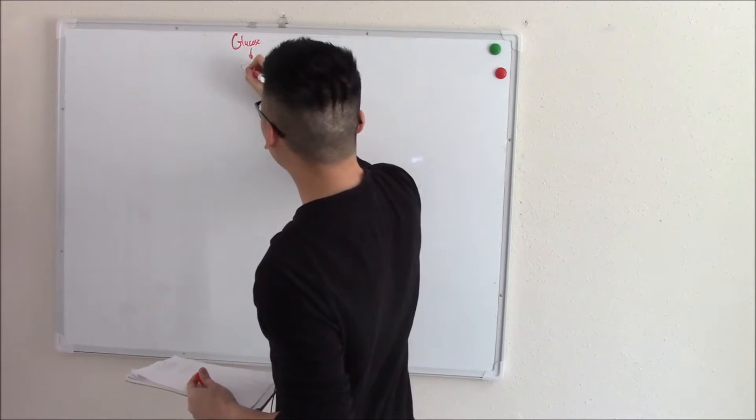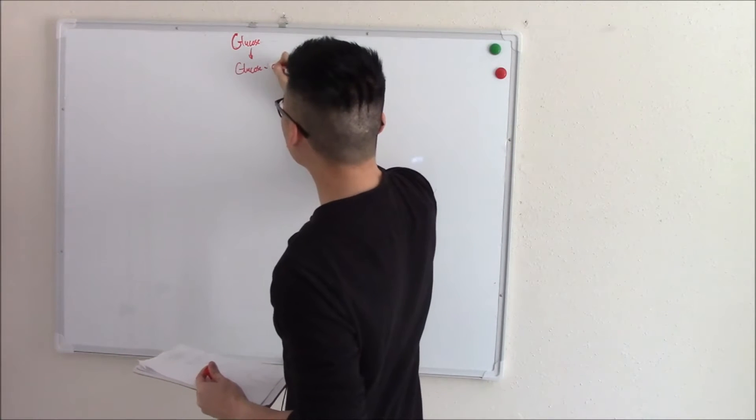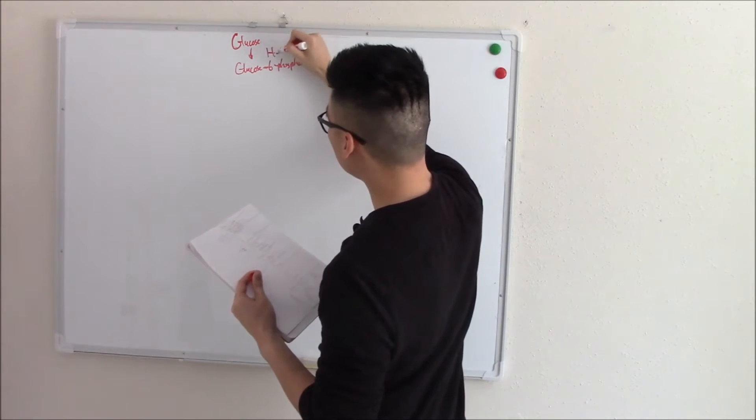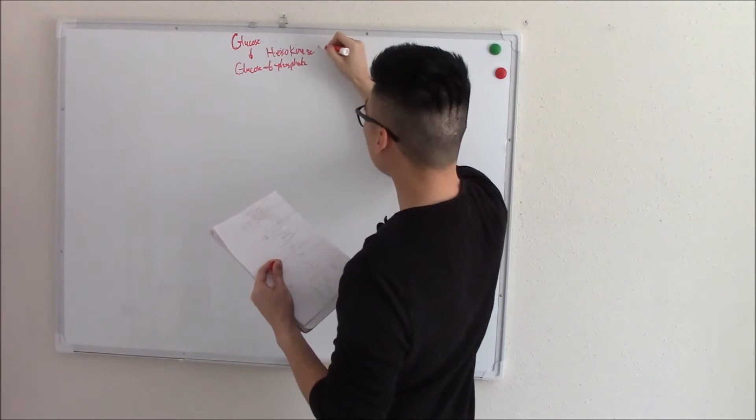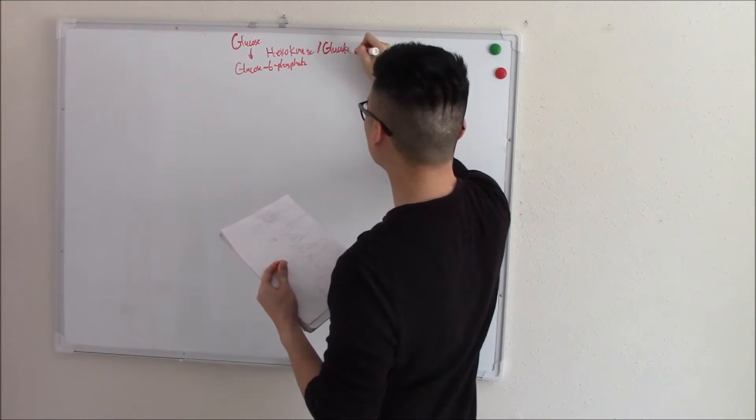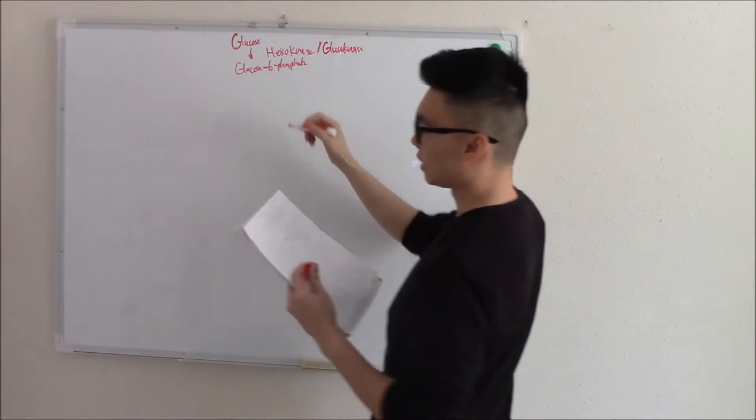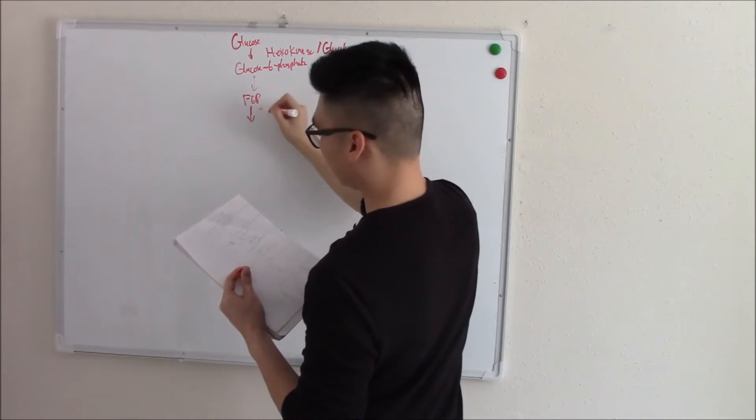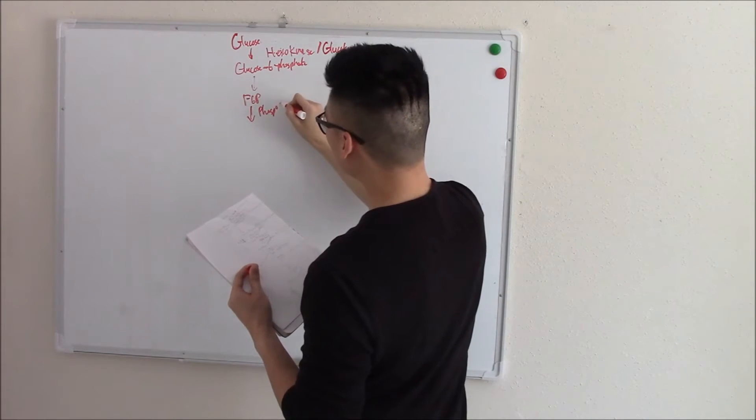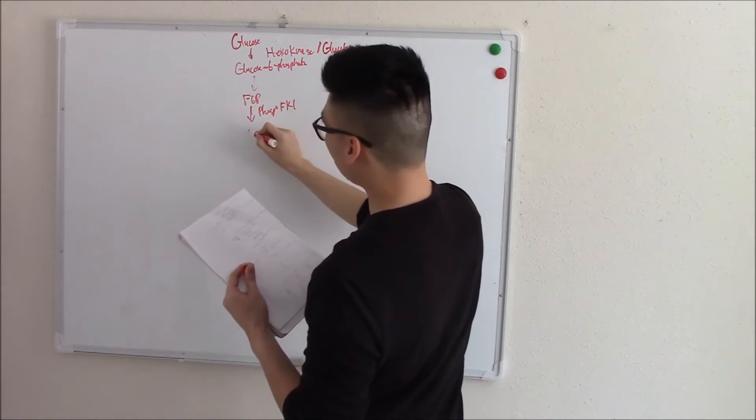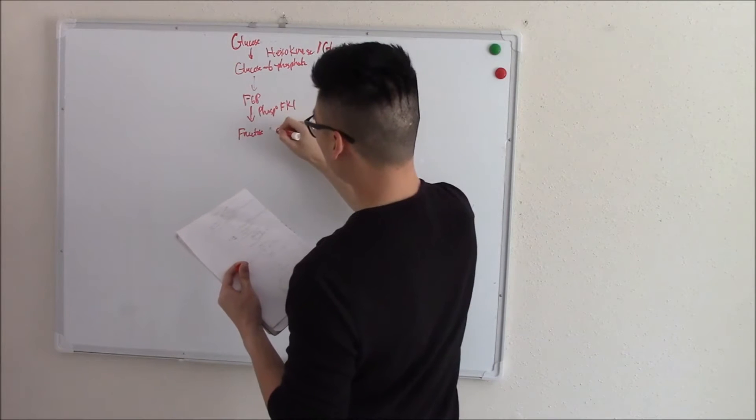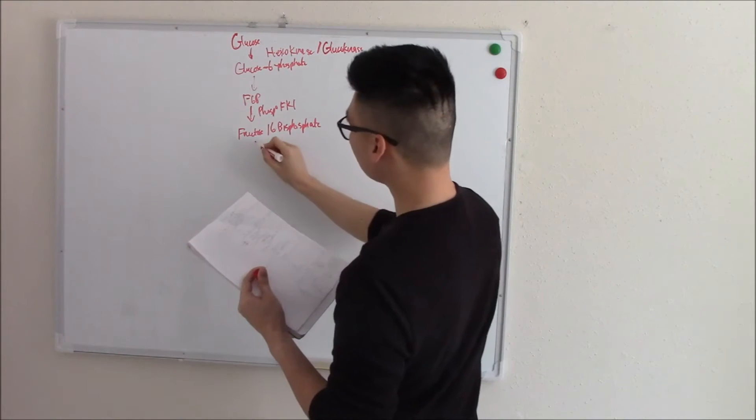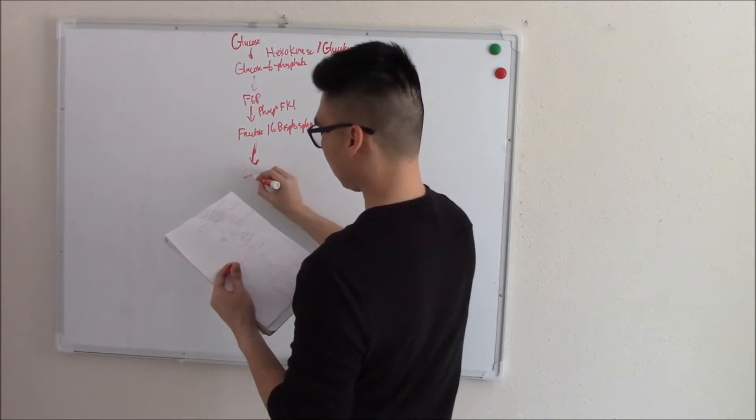So let's start with glucose. And it immediately gets phosphorylated in the sixth position to become glucose 6-phosphate. And this is via the enzymes hexokinase and glucokinase. Glucose 6-phosphate becomes fructose 6-phosphate. And from that, with the help of its friend phosphofructokinase 1, it becomes fructose 1,6-bisphosphate.